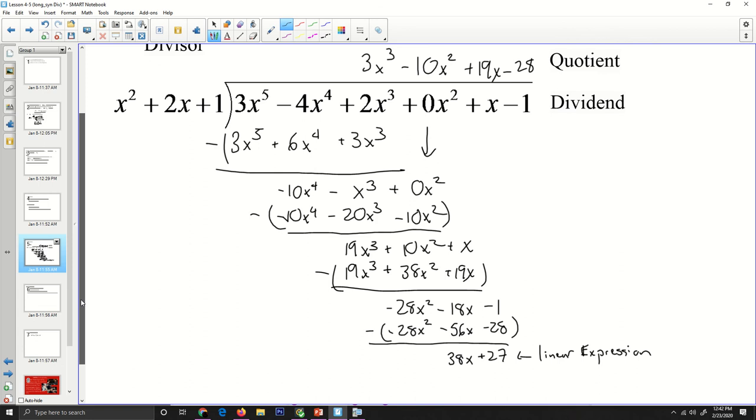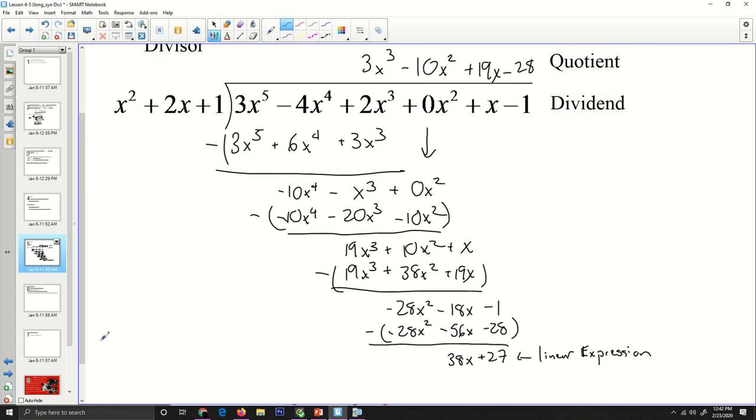My result, my final answer is going to be this quotient: 3x to the 3rd minus 10x squared plus 19x minus 28 plus the remainder, 38x plus 27, all over the divisor, x squared plus 2x plus 1. And that is my final answer.